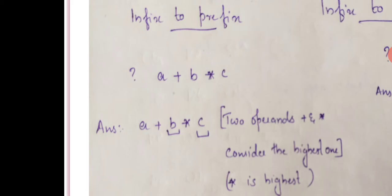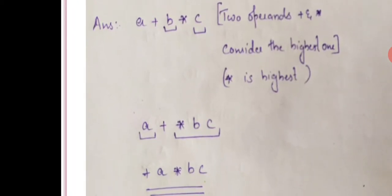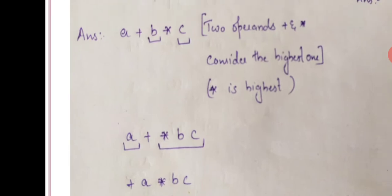To convert to prefix, the operator is moved before the operands. For example, a plus b star c — since star has higher precedence, we first take b star c, which becomes star b c in prefix. Then combining with a plus gives us plus a star b c.